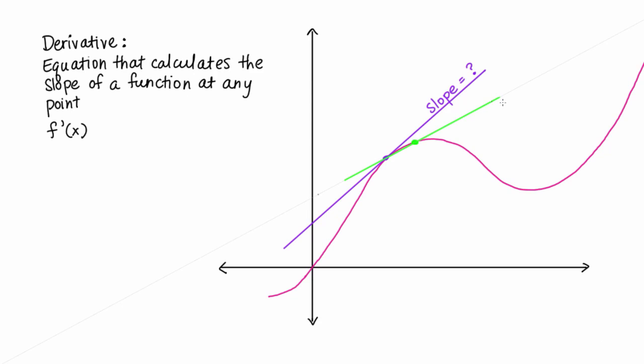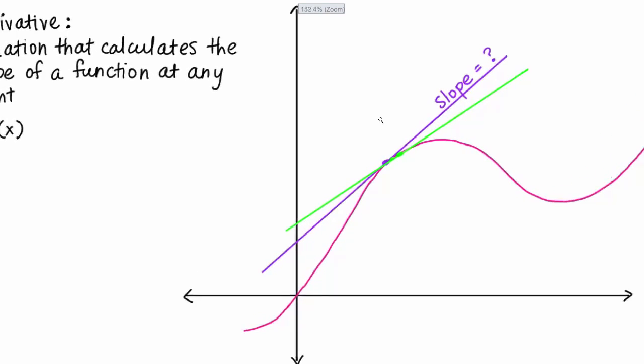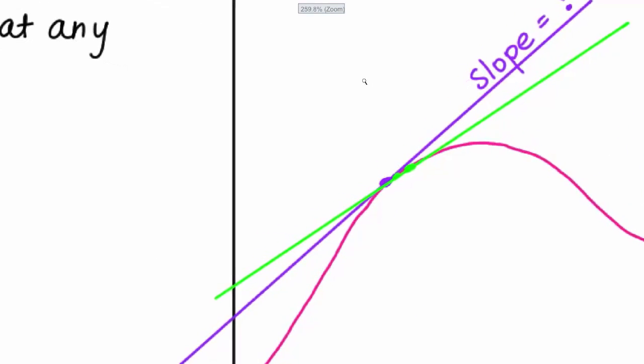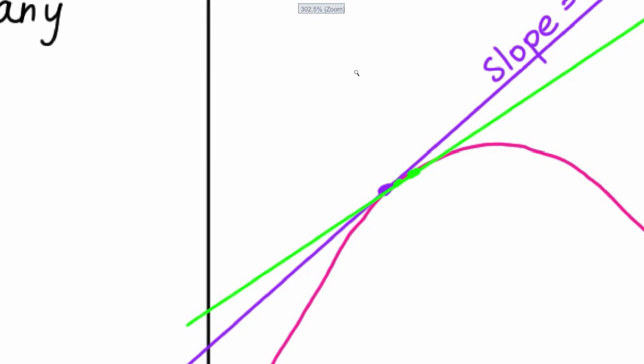How could you get an even better estimate? Well, you could pick a point that's even closer to the point of interest, like right here. Then if you find the slope of the secant line, it's a better approximation, but still not exact. So again, you want to pick a point even closer, as close as you can possibly get. You could get infinitely close to the point of interest.